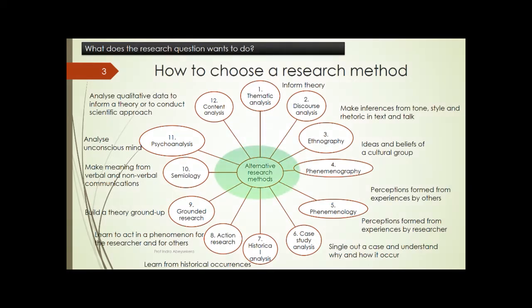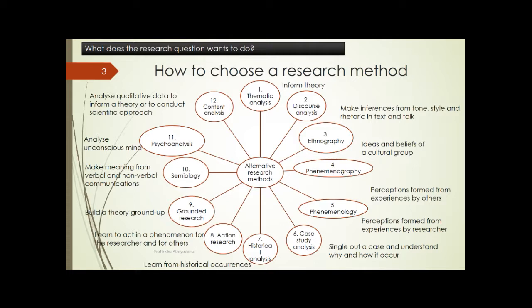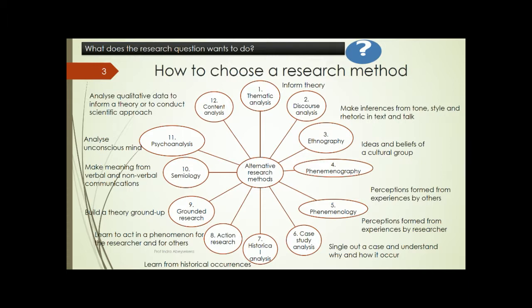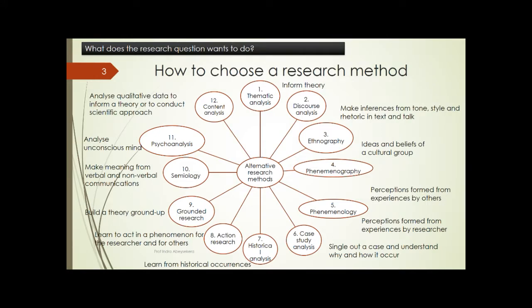Let's look at the alternative research methods. I have outlined here 12 research methods. What's important for us is to inquire into what the research question wants us to do. So, depending on what the research question is that we are going to investigate, we will choose the research method.